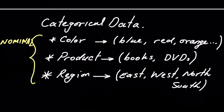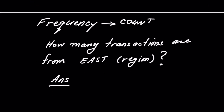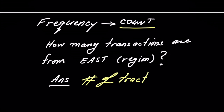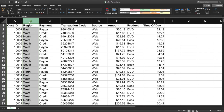Let's focus on the word frequency. Frequency basically tells us the count — so how many transactions are from the eastern region? The answer would be the number of transactions or the count. If I go back to my Excel here, I can see the region column has a bunch of different values, and I could manually count the ones that come from east, but of course this is very time-consuming.